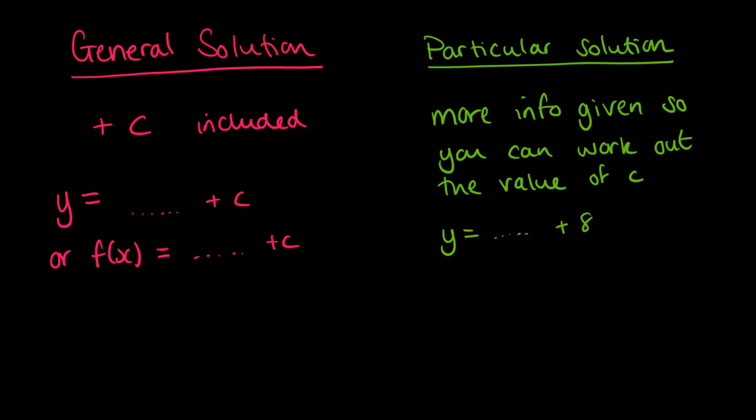you might have a constant. Maybe it's an 8 or it might be a minus 3 or it could be a plus 127. It really doesn't matter. Or you could be doing it in function notation. And again, you've got a constant at the end. You've given it some number. You've worked out what it is according to the information that you were given there.